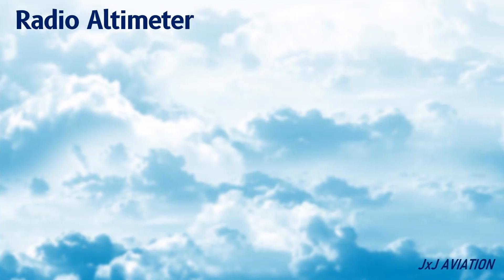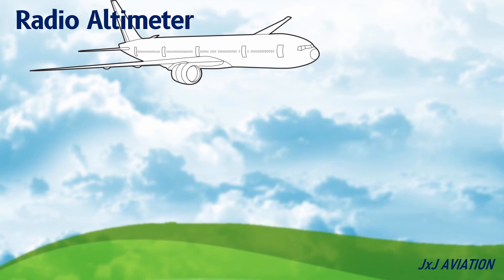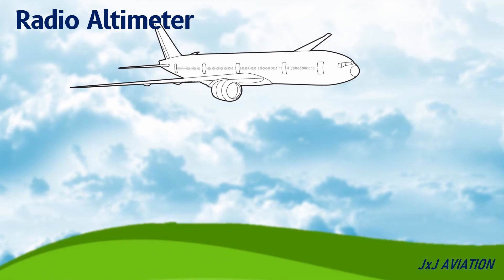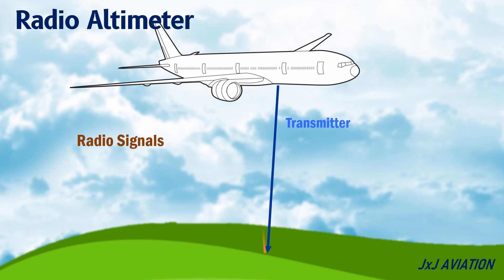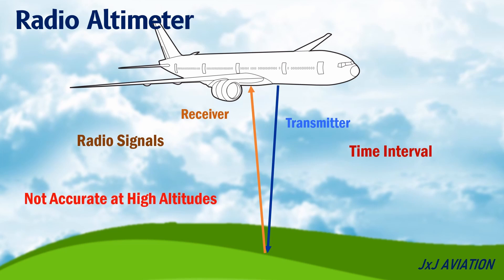The radio altimeter gives an aircraft's height above ground level. This altimeter uses radio signals which are transmitted and received by the aircraft. The time interval between the transmission and the reception of the radio signals is measured and used to calculate the height of the aircraft. Since the values will not be accurate at higher levels, this altimeter is used only when the aircraft is close to the ground, usually below 2,500 feet.